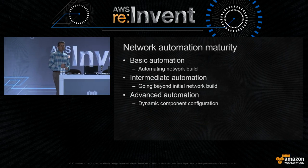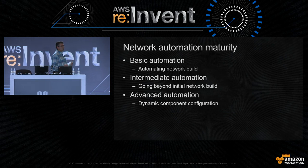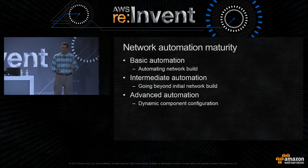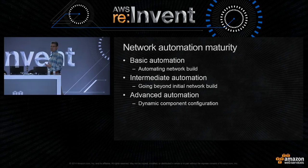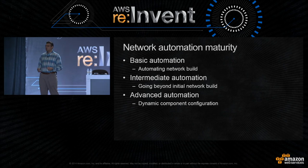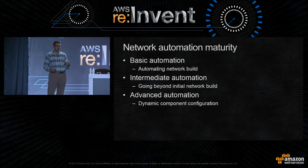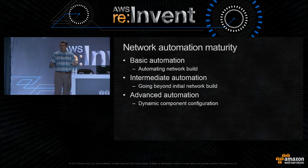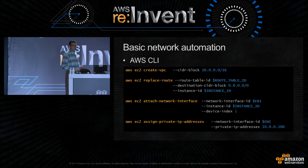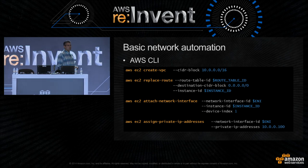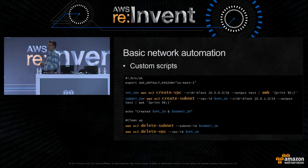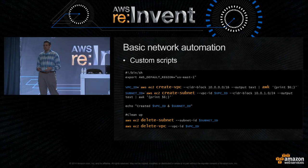To start out, we're going to talk about network automation. There's a level of maturity I've seen customers have with different levels of automation. Basic automation starts with automating your initial network build. You can build on that for intermediate automation, going beyond the initial build. Where I really want to get you thinking is moving on to advanced automation — creating dynamic component configuration so your networks can dynamically adjust to application and business needs. Starting with basic automation, we have a command line tool to interact with our APIs. You can create VPCs, subnets, route tables, and assign IP addresses, then put those commands into very simple shell scripts.